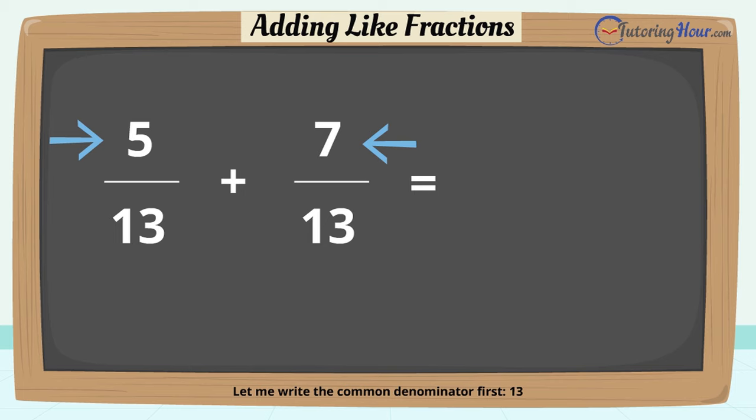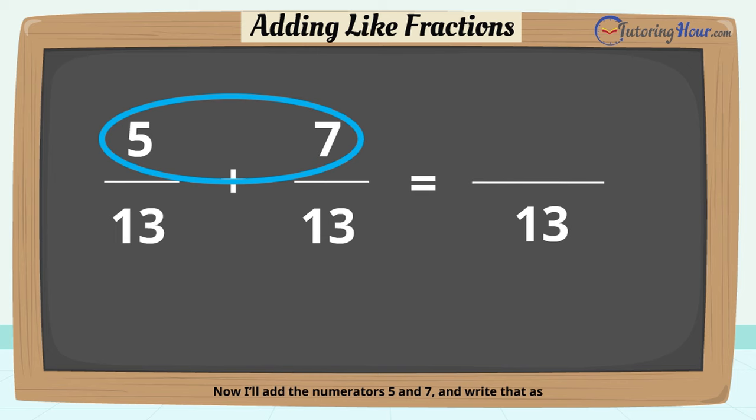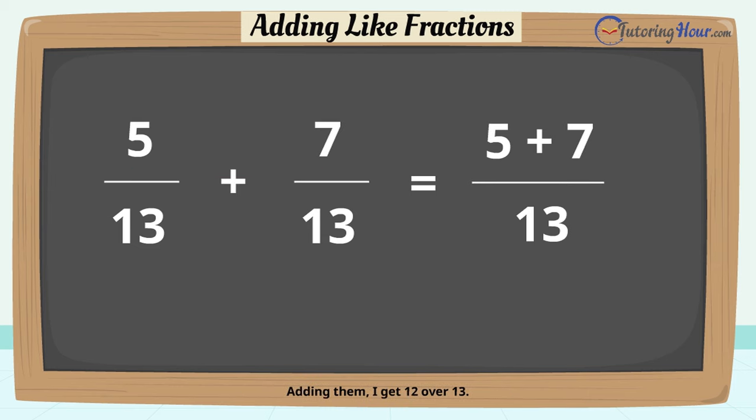Let me write the common denominator first, 13. Now I'll add the numerators five and seven and write that as five plus seven over the common denominator, 13. Adding them, I get 12 over 13. Woohoo, that was quick.